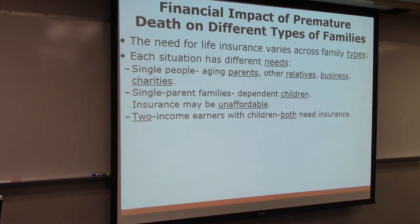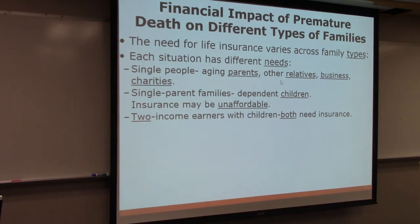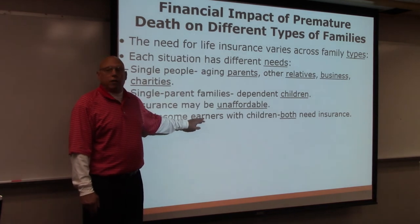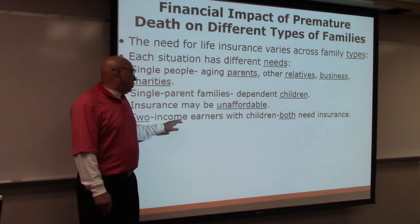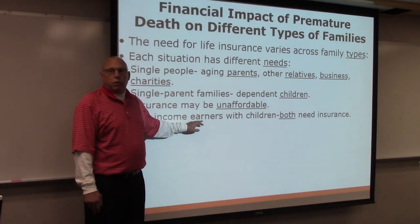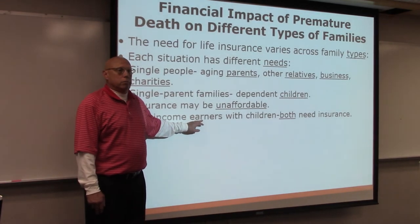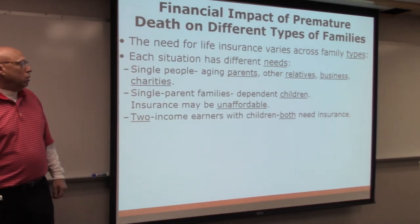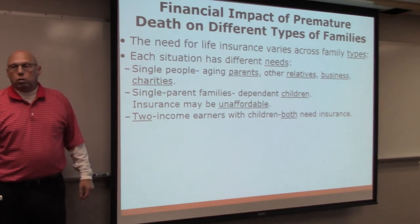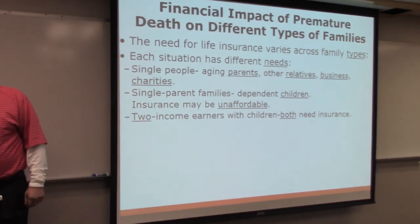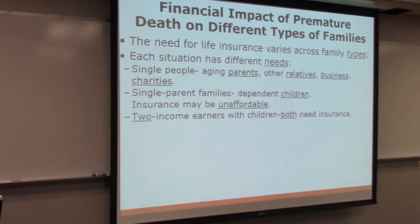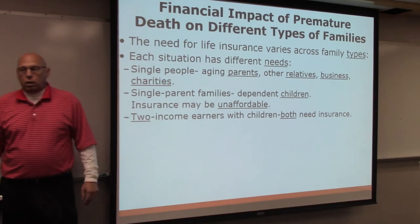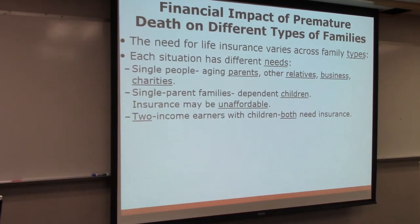Two income earners with children: you'll need to cover both incomes unless you're living below your means. Most people have two earners because they want a higher lifestyle — a bigger house, nicer cars, private school for the kids. If you lose one earner, chances are you won't be able to maintain your lifestyle, so you insure both of them.